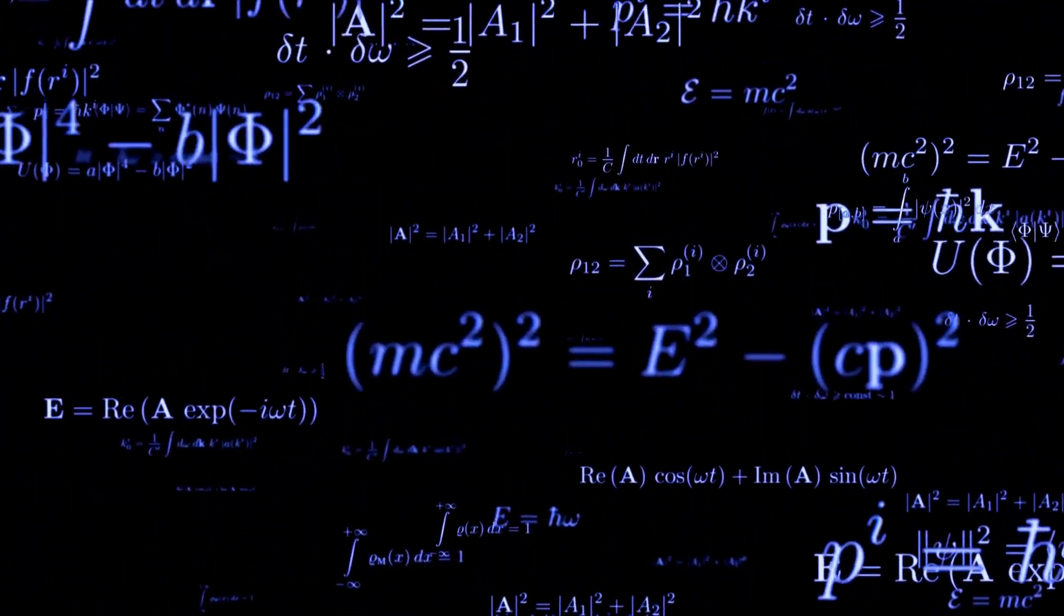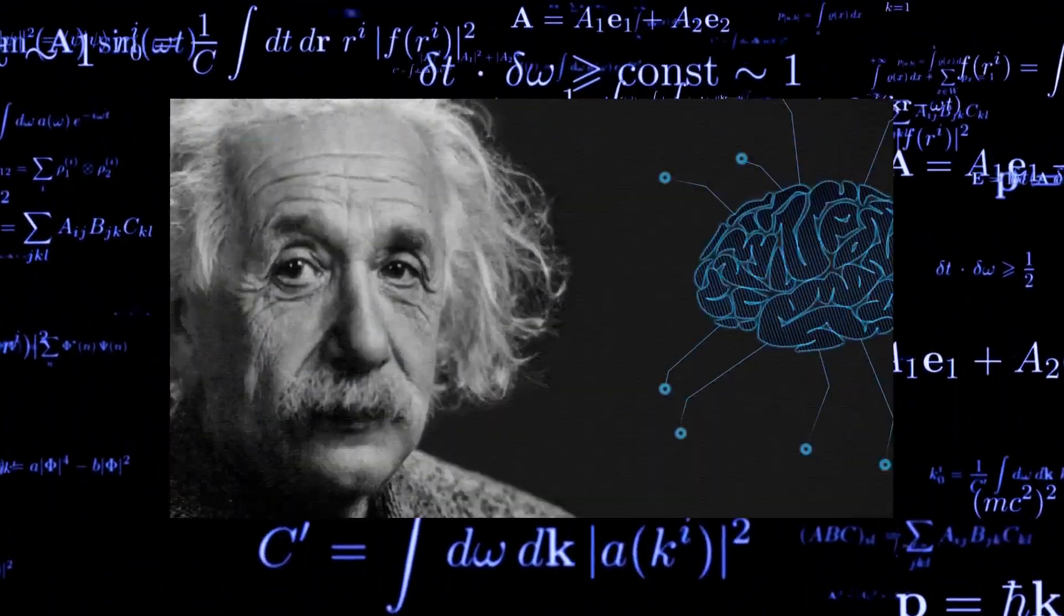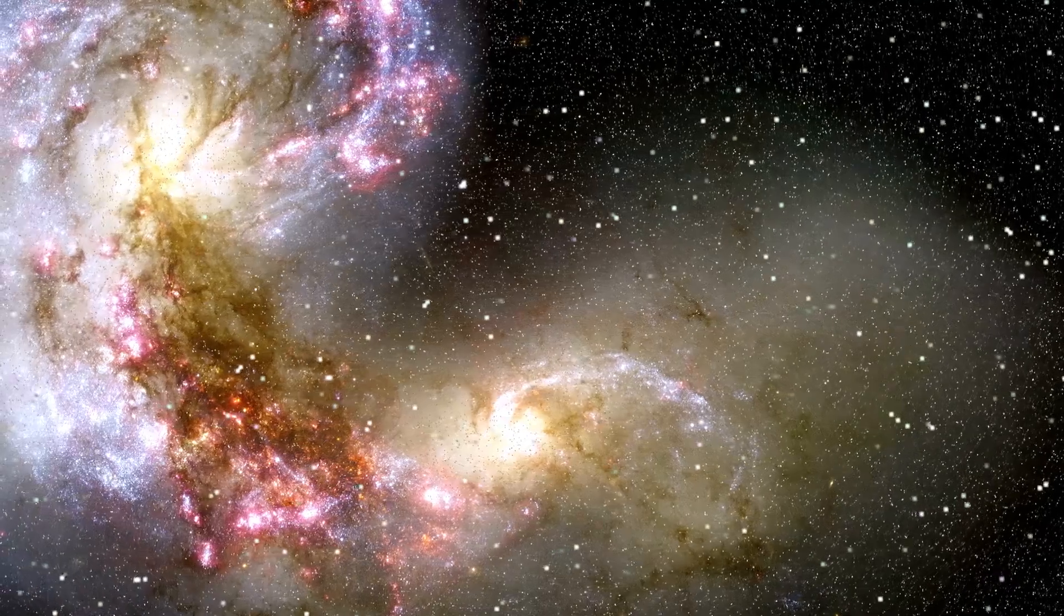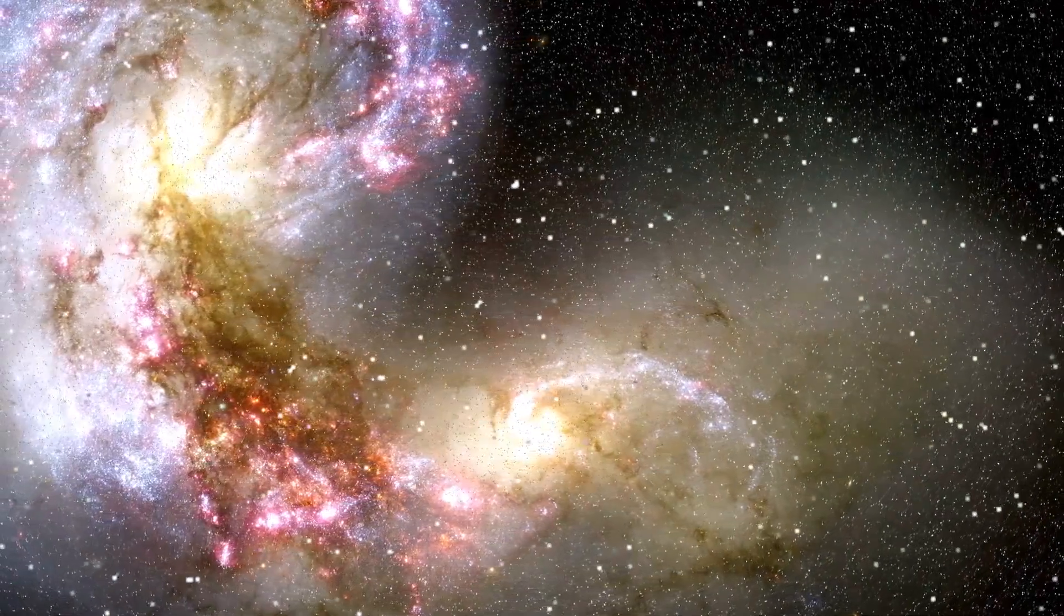And guess who gets another confirmation of this theory? Albert Einstein and his revolutionary theory of general relativity, which predicted that light could be bent by gravity. This observation fulfills Einstein's prophecy, reaffirming the brilliance of his ideas.